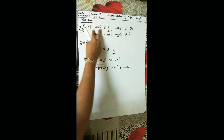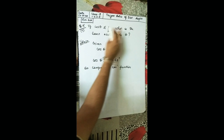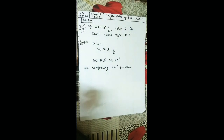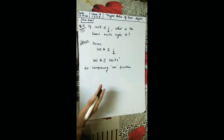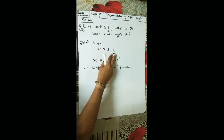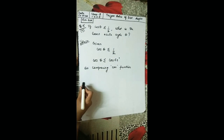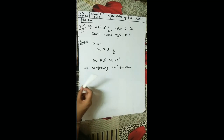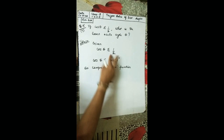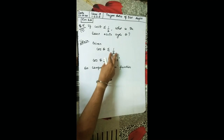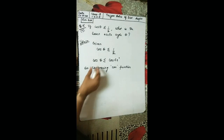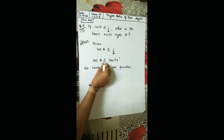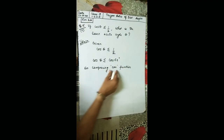If cos θ is less than or equal to half, what is the least acute angle θ? Given cos θ ≤ ½, we look at the trigonometric table — cos 60° = ½. So in place of ½, we write cos 60°. Now we have cos θ ≤ cos 60°.